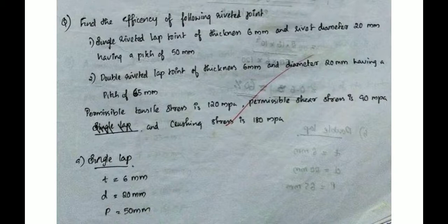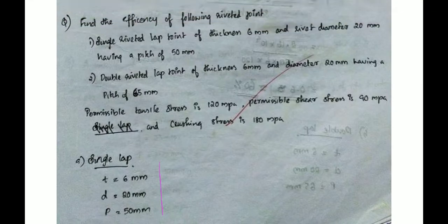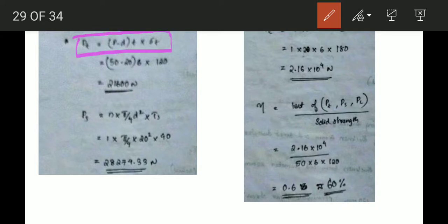The next question is to find the efficiency of the following riveted joints. Number 1: a single riveted lap joint with plate thickness t = 6 mm, rivet diameter d = 20 mm, and pitch p = 50 mm. So n = 1. The tearing resistance: Pt = (p - d) × t × σt = (50 - 20) × 6 × σt = 120 × σt.